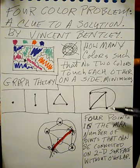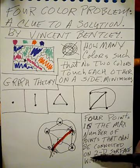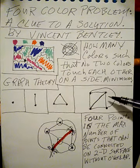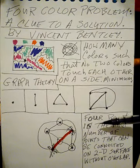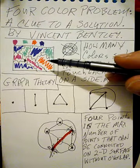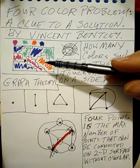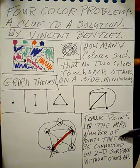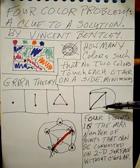So here we see that four points is the maximum number of points that can be connected on a two-dimensional surface without having to overlap one of the lines. And I propose that the fact that the minimum number of colors to color a map without any two colors touching edges is the same problem as asking the maximum number of points that can be connected without a line having to cross.